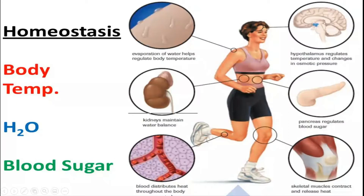Blood distributes heat throughout the body. Whether we have excess heat or cold conditions, vasoconstriction or vasodilation occurs through the body. This mechanism is also involved in homeostasis. Skeletal muscles are important to provide heat to the body and to induce the shivering mechanism — skeletal muscles contract and as a result, heat is released, maintaining the proper temperature balance of the body.